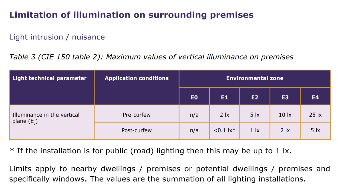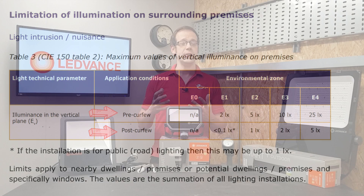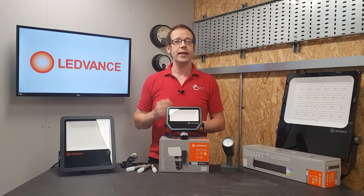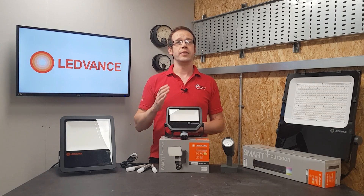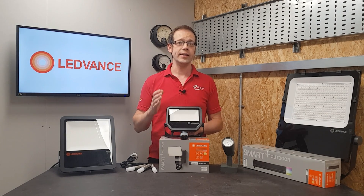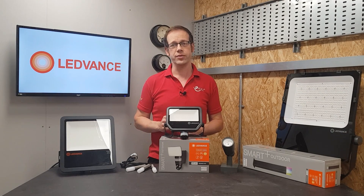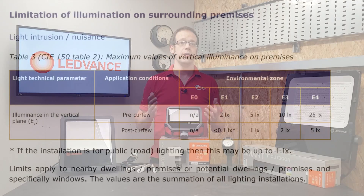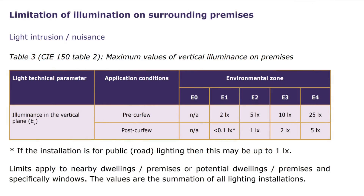A quick explanatory note: for each environmental zone you'll see there's a pre-curfew and a post-curfew value. That's not referring to a time when we should all be off the streets — it's merely an allotted time decided on by the local planning authority to determine when artificial light levels should be reduced.